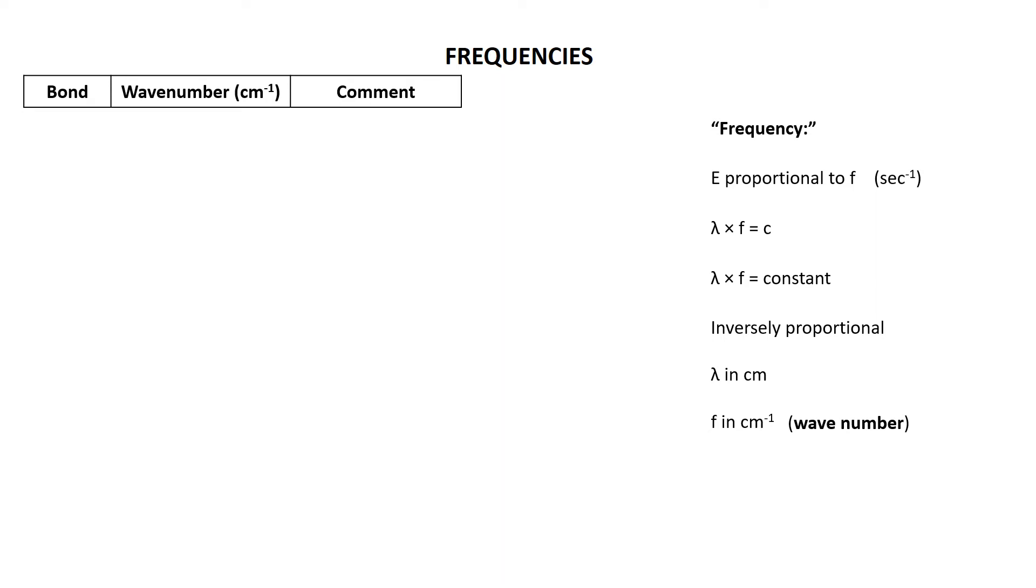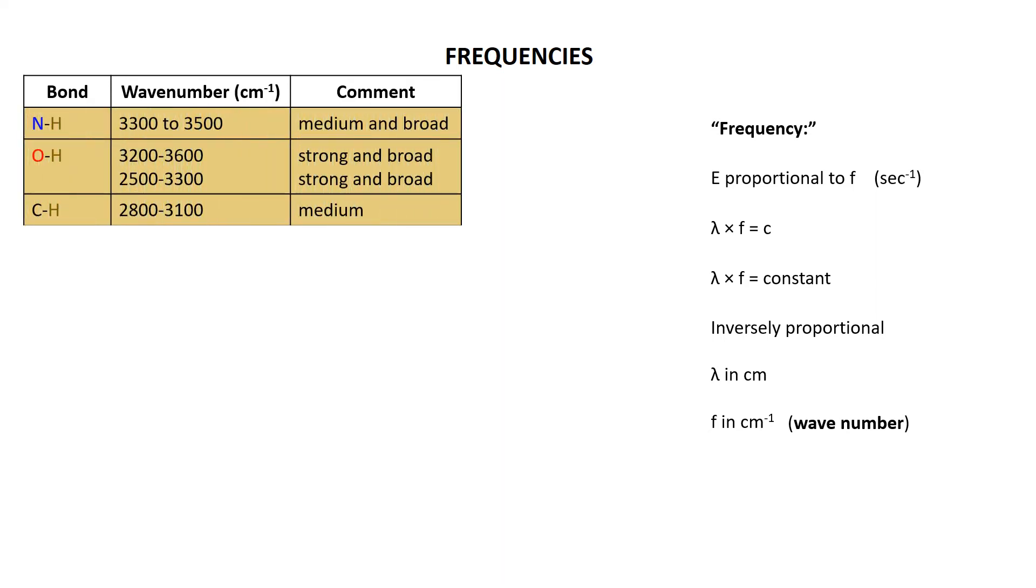Going back to the table and expanding on what we talked about in the previous movie. The highest wavenumbers, the highest absorptions of infrared photons by bonds, is by bonds to hydrogen. You can see nitrogen to hydrogen absorbs photons that have a wavenumber 3300 to 3500. OH, 3200 to 3600, or in acids 2500 to 3300. Carbon hydrogen, 2800 to 3100. So the highest absorbances are usually associated with bonds to hydrogen.